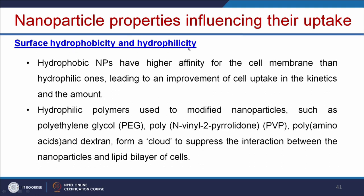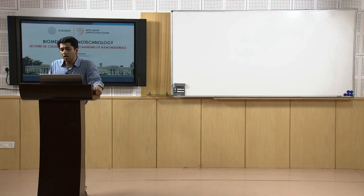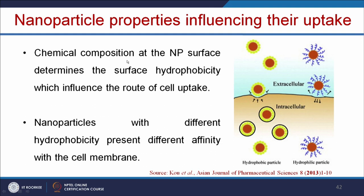Regarding surface hydrophobicity and hydrophilicity: hydrophobic nanoparticles have higher affinity for the cell membrane than hydrophilic ones, leading to improvement in cell uptake in terms of kinetics and amount. Hydrophilic polymers used to modify nanoparticles such as polyethylene glycol (PEG), PVP, or dextran form a cloud that suppresses interaction between nanoparticles and the lipid bilayer of cells, thus increasing the prolonged circulation of the nanoparticle in the system. The chemical composition at the nanoparticle surface determines surface hydrophobicity and influences the route of cellular uptake; nanoparticles with different hydrophobicity present different affinity with the cell membrane.